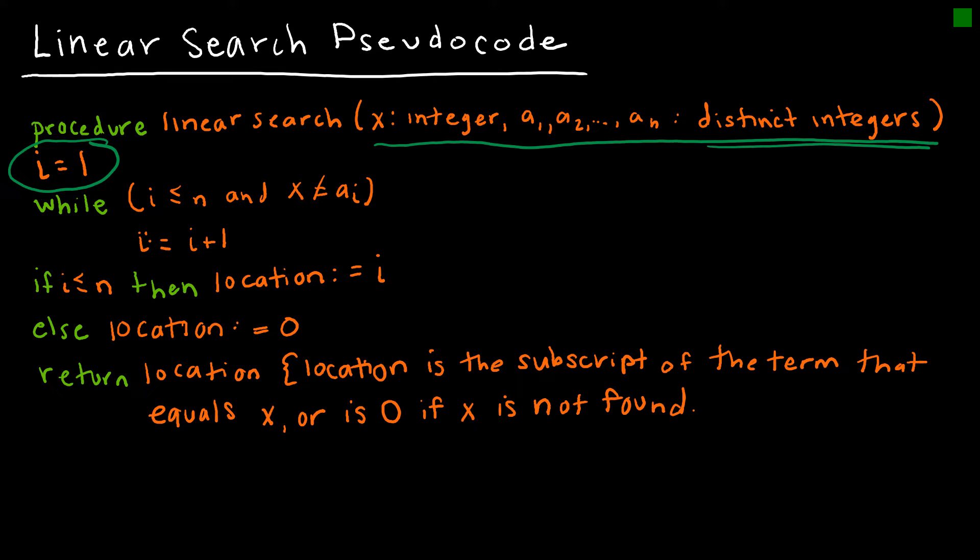Then we're saying here, let's start at the first value of the sequence, because i equals 1 means a sub i equals a sub 1. That means we're starting right here. Then we're telling the computer the process. While i is less than or equal to n, remember what's n? That's the total number of numbers we have. So while there are still integers to look at, and x, our desired value, is not equal to the value that we're checking, then we're going to go on to the next value in the sequence. So if a sub 1 isn't our x value we're looking for, then we're going to go on to a sub 1 plus 1, which of course is a sub 2.